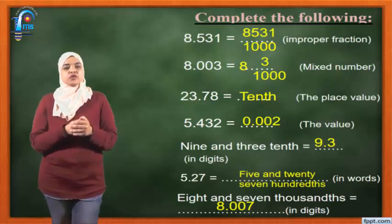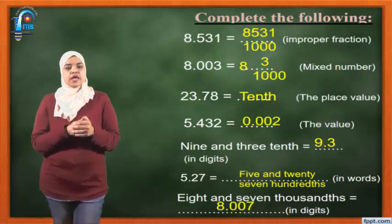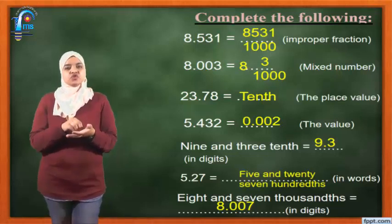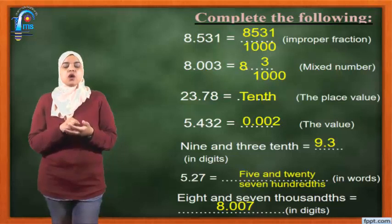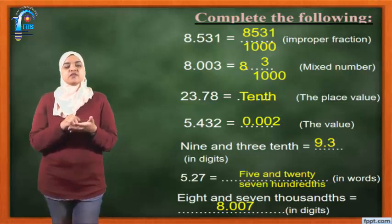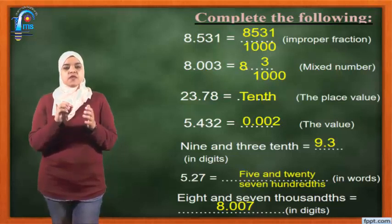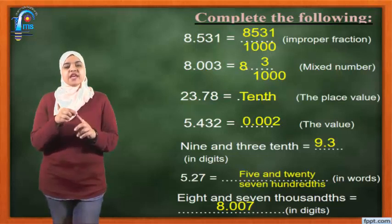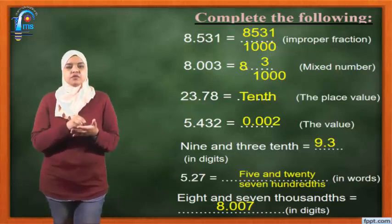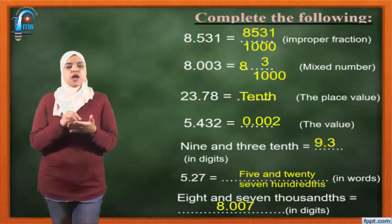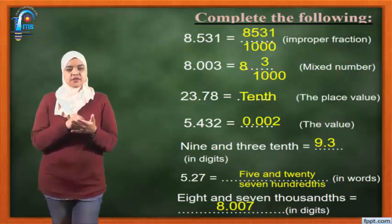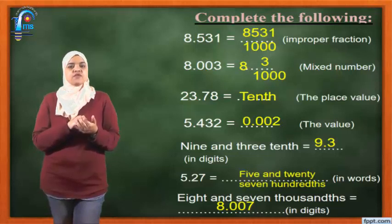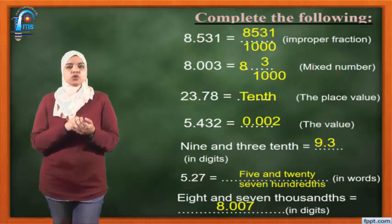5.432 equals what? I want the value of 2. Instead of the whole number, I put 0. Then the decimal point. Instead of 4, I put 0. Instead of 3, I put 0. And write 2 as it is. So the value will be 0.002.